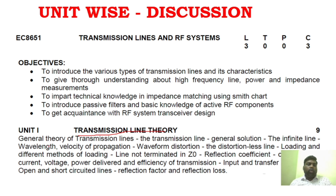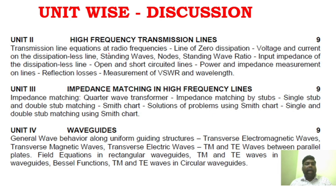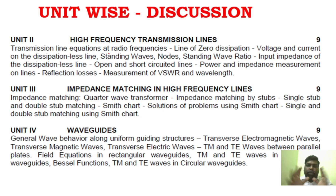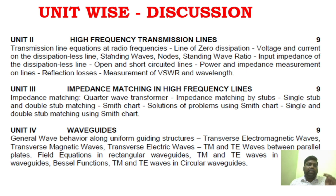Unit 2 covers high frequency transmission lines. Here are the key areas: measurements and their importance. You can do all measurements — power, impedance, VSWR measurements. Similarly, zero-dissipation lines are important — generalize the line of zero-dissipation line.